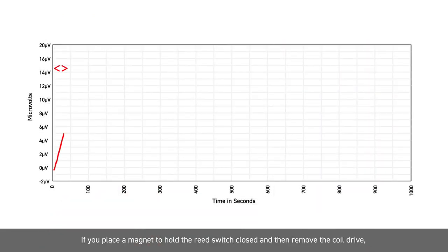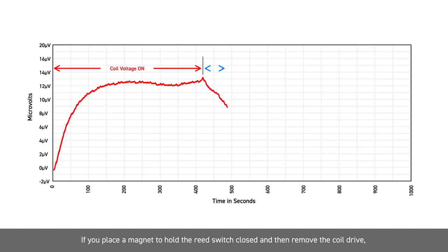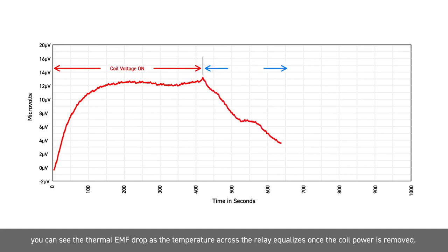If you place a magnet to hold the Reed switch closed and then remove the coil drive, you can see the thermal EMF drop as the temperature across the relay equalises once the coil power is removed.